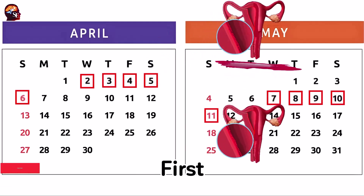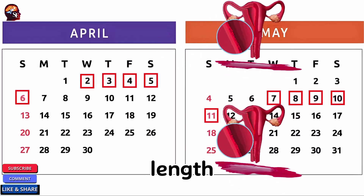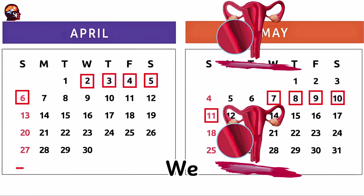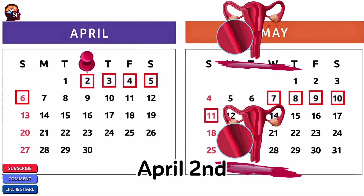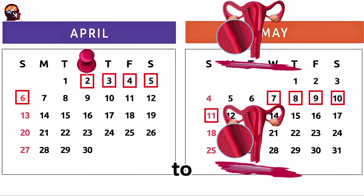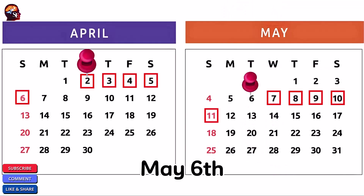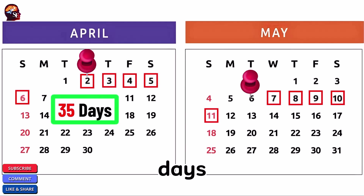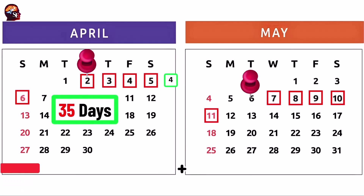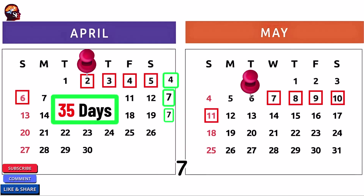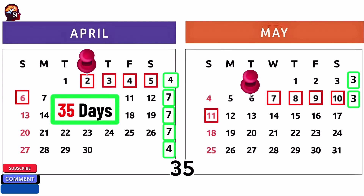First, we calculate the length of the menstrual cycle. We count from the first day of the period, April 2nd, to the day before the first day of the next period, May 6th. The result is 35 days: 4 + 7 + 7 + 7 + 4 + 3 + 3 = 35.